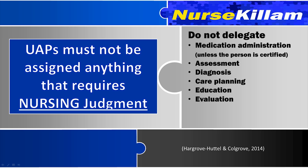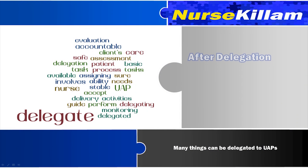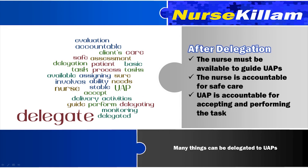Unlicensed assistive personnel must not be assigned to care for unstable patients under any circumstances. When a patient is stable, there are a lot of basic care activities that can be delegated to an unlicensed assistive personnel. Once a task is delegated, the nurse must be available to guide the UAPs. Delegation involves more than just assigning tasks — the nurse delegating remains accountable for the delivery of safe care. The UAP is also accountable for their decision to accept the delegation and perform the task. However, the nurse needs to be sure that the UAP has the ability to meet the client's needs.